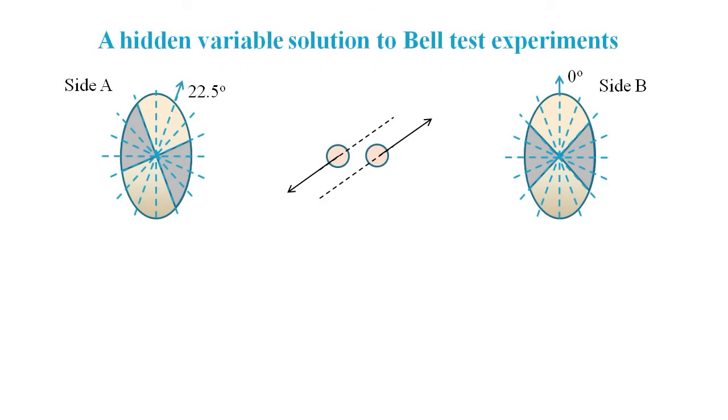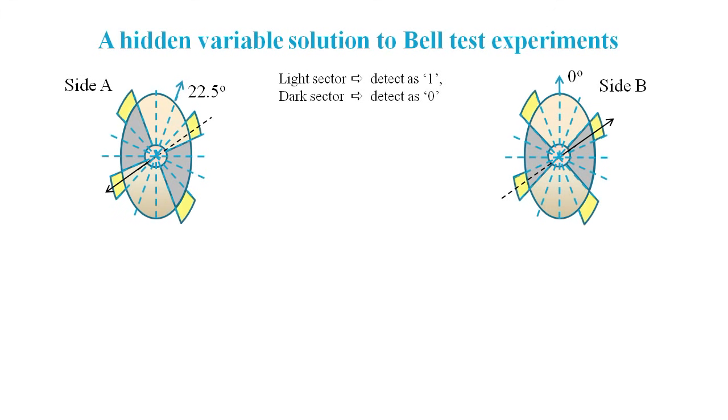Now let's see how all this can be applied to a Bell test, where the filter on side A is set to 22.5 degrees, and the filter on side B is set to 0 degrees. The dotted lines mark out 22.5 degree sectors, and if the photon's angle maps onto a dark sector, then it will be reflected down to be detected as 0, as opposed to going straight through and being detected as 1. The entangled photons travel to their respective sides. In this case, side A should detect a 1, whereas side B should detect a 0, assuming both sides get detected. These highlighted sectors are the only ones that will give us different readings. All the other sectors will result in same readings.